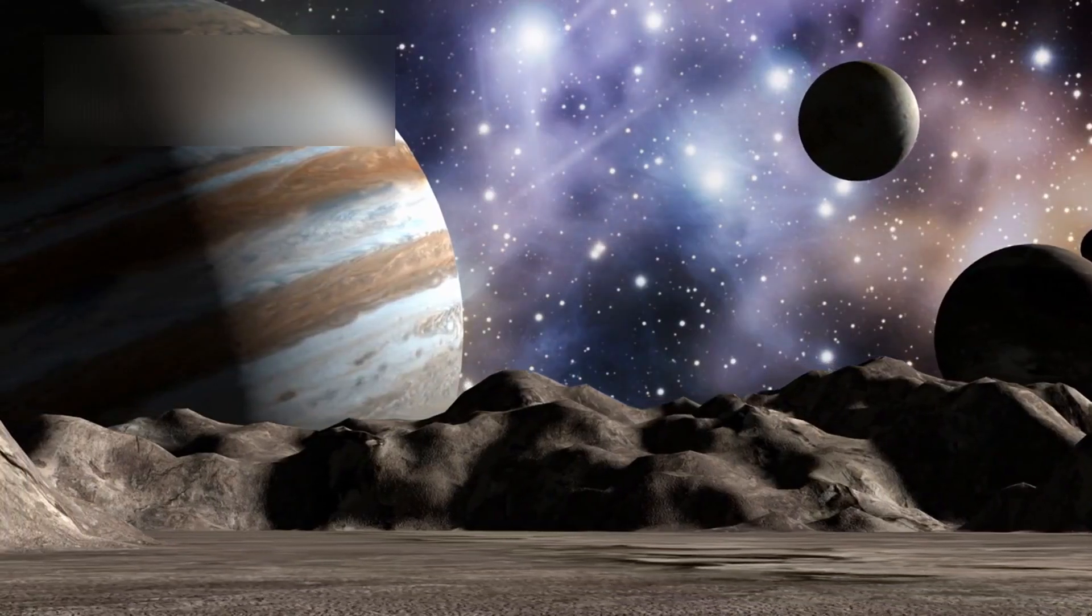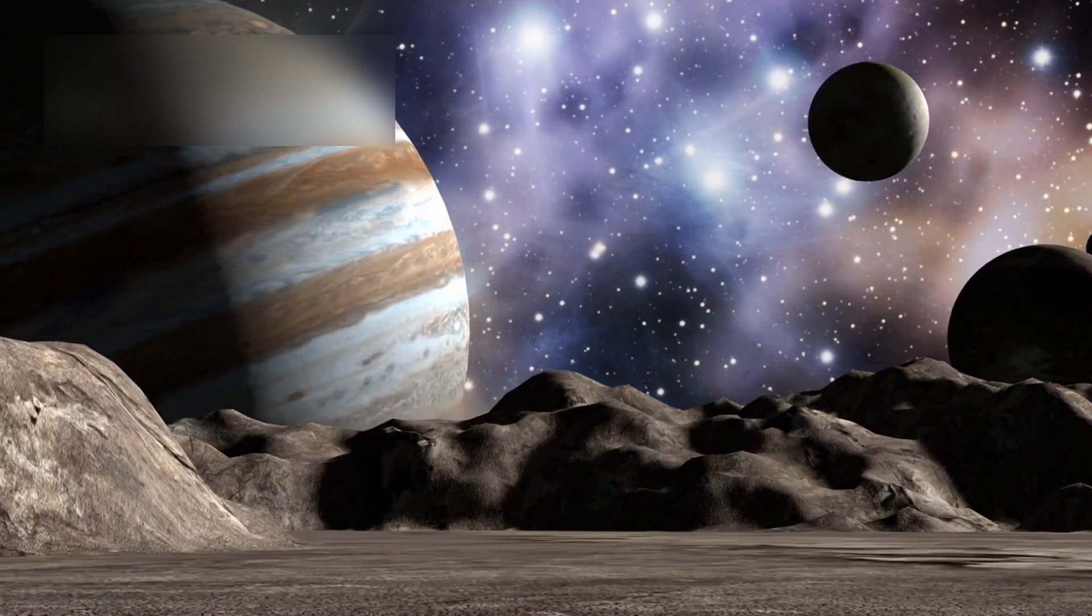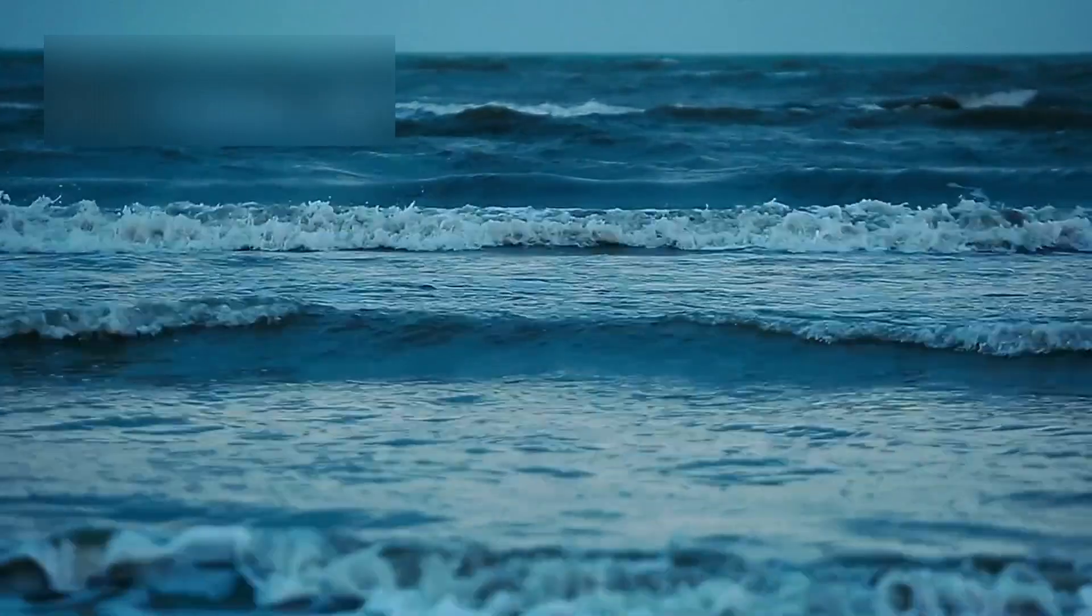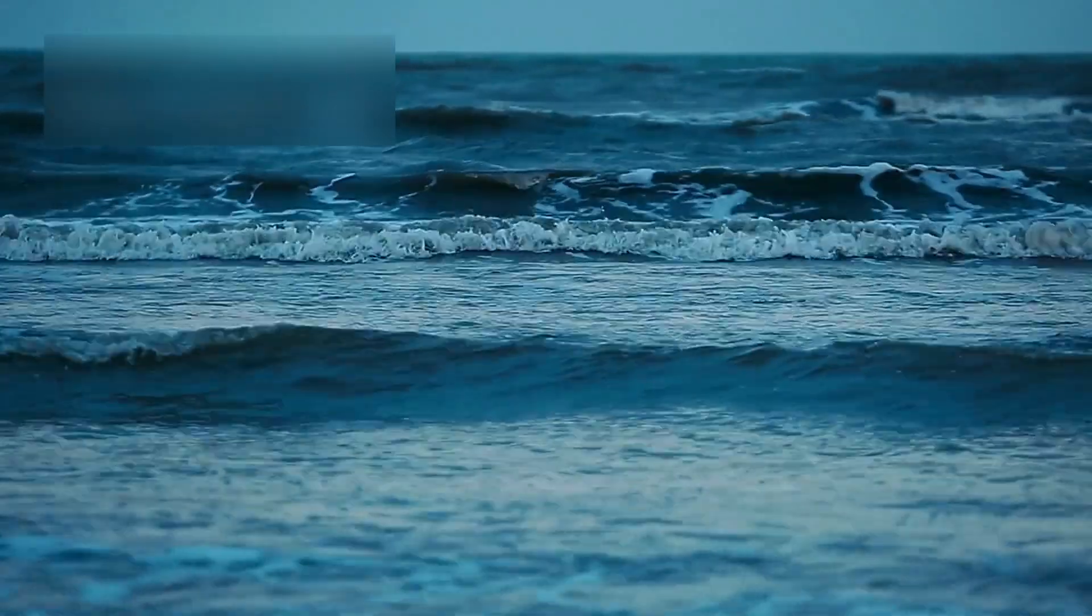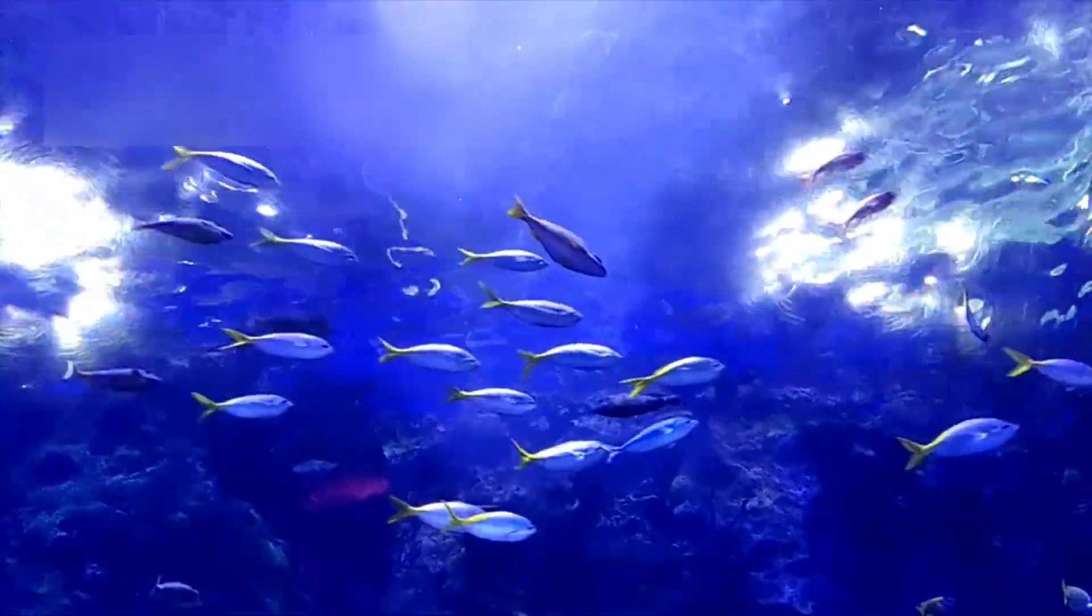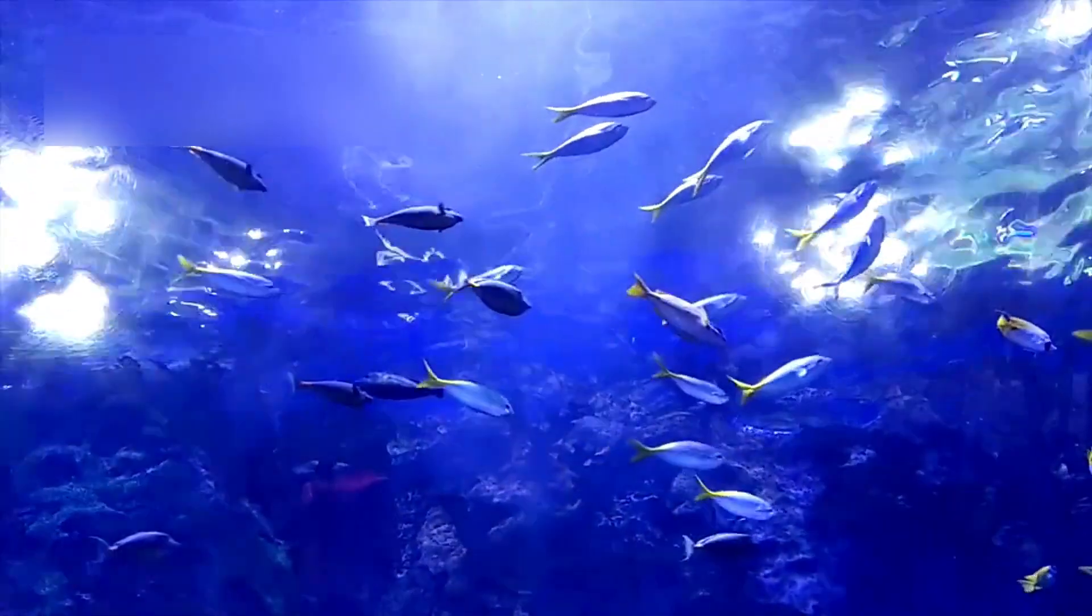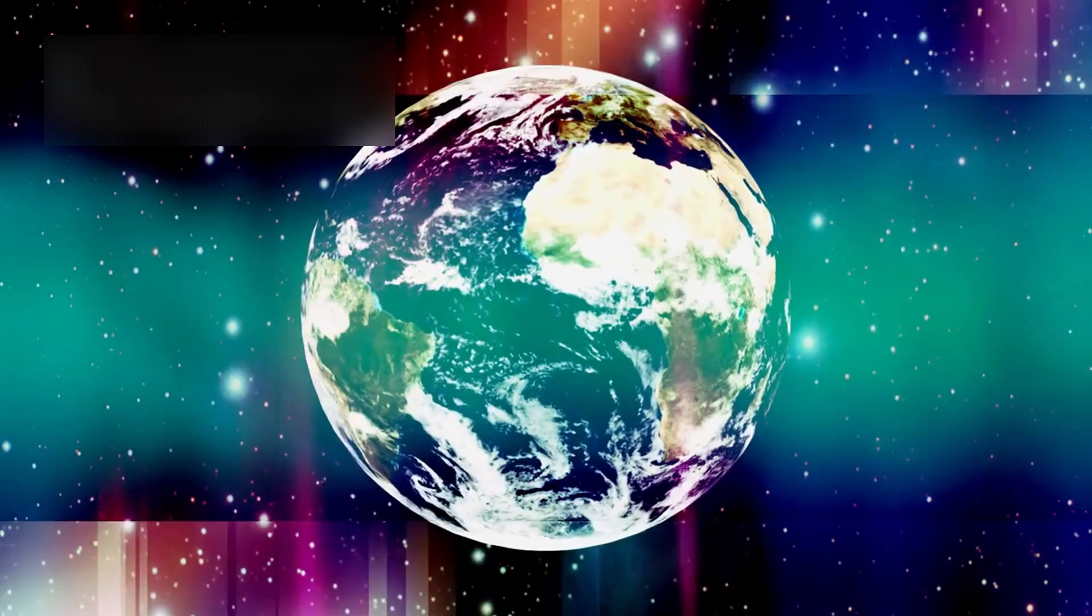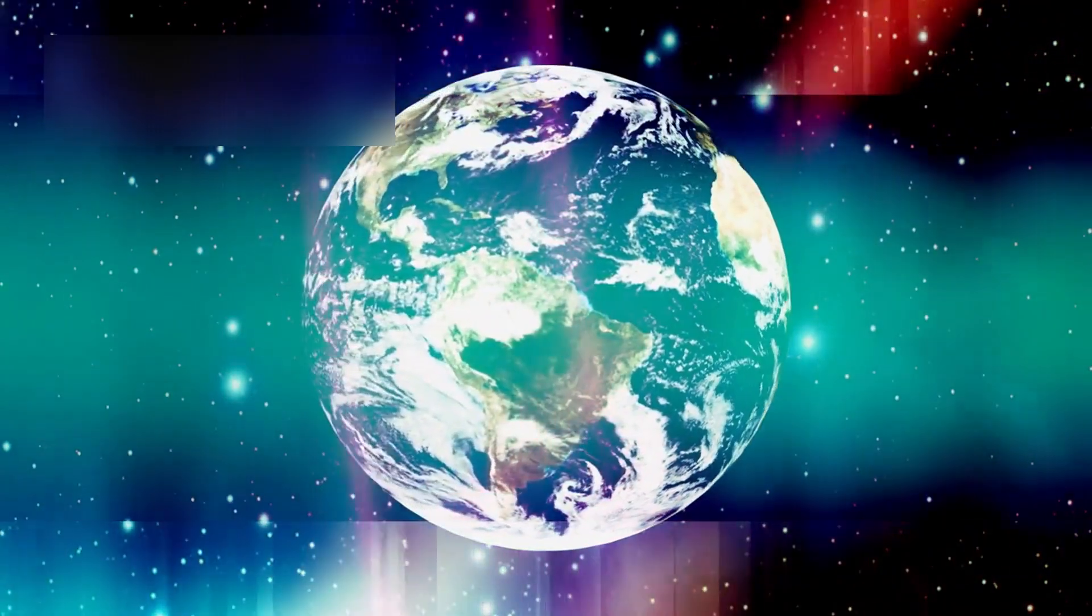Planets and moons trace invisible paths around their stars, guided by gravity's unseen threads. Some are frozen wastelands, others are seas of storms and fire, and a few may cradle oceans, air, and the quiet promise of life. Each world tells its own story, written not in words but in orbits, minerals, and light.